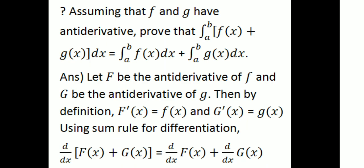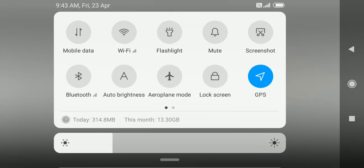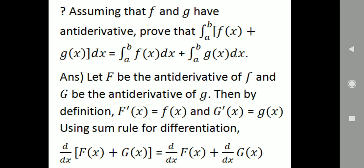Proof of the sum rule: Assume that F and G are antiderivatives of f and g respectively. We want to prove that the integral from A to B of f of x plus g of x dx equals the integral from A to B of f of x dx plus the integral from A to B of g of x dx. Let F be the antiderivative of f and G be the antiderivative of g.